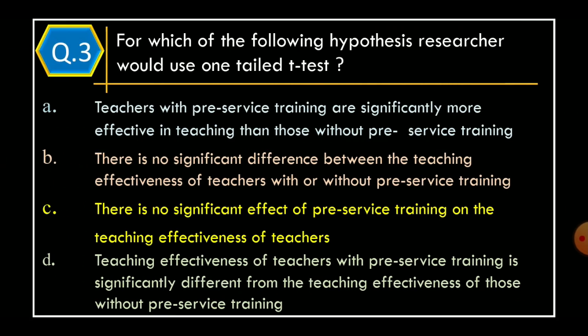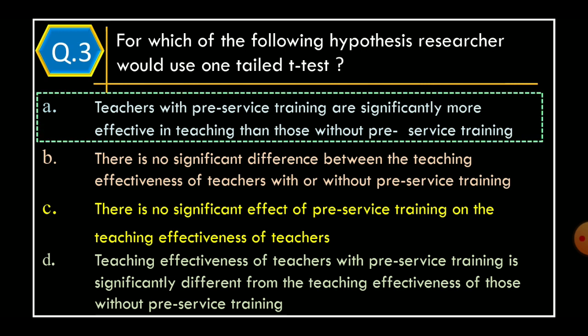Question 3. For which of the following hypotheses would a researcher use a one-tailed t-test? Option A: Teachers with pre-service training are significantly more effective in teaching than those without pre-service training. Option B: There is no significant difference between teaching effectiveness of teachers with or without pre-service training. Option C: There is no significant effect of pre-service training on the teaching effectiveness of teachers. Option D: Teaching effectiveness of teachers with pre-service training is significantly different from those without pre-service training. The correct option is Option A: Teachers with pre-service training are significantly more effective in teaching than those without pre-service training.